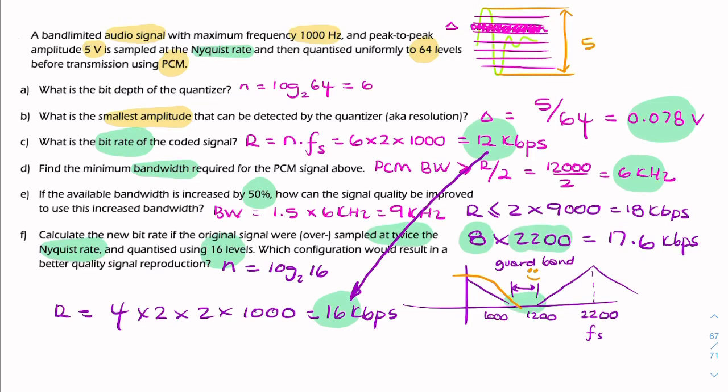So, just think for a second of the step size. The step size is going to be 5 divided by 16. So that's 0.3 volts compared to 0.078 volts. So think about the quantization error. Think about the noise. Think about the quality of this reproduced signal. So this will be a poorer quality signal. So it will be a poorer quality reproduction, despite the higher bit rate.